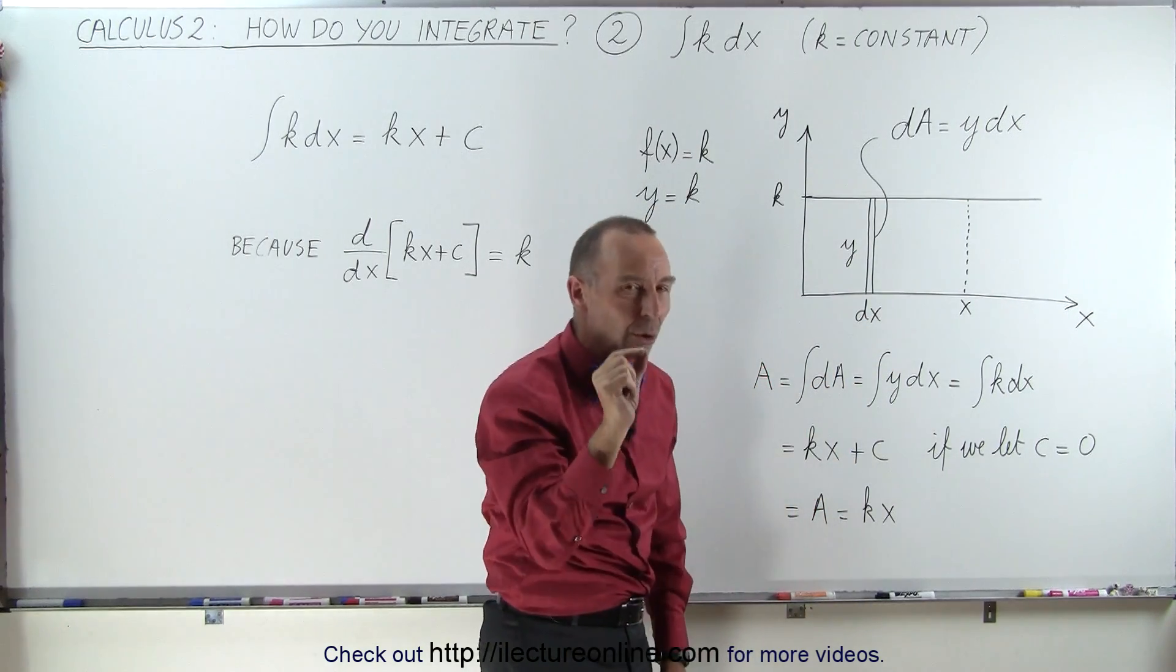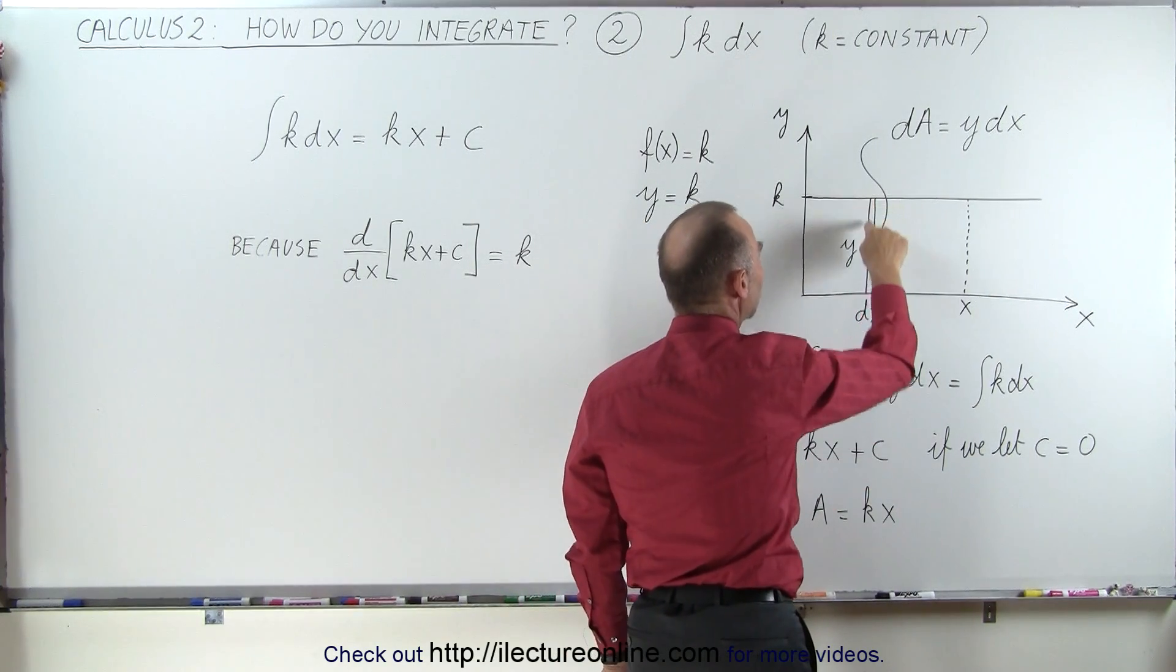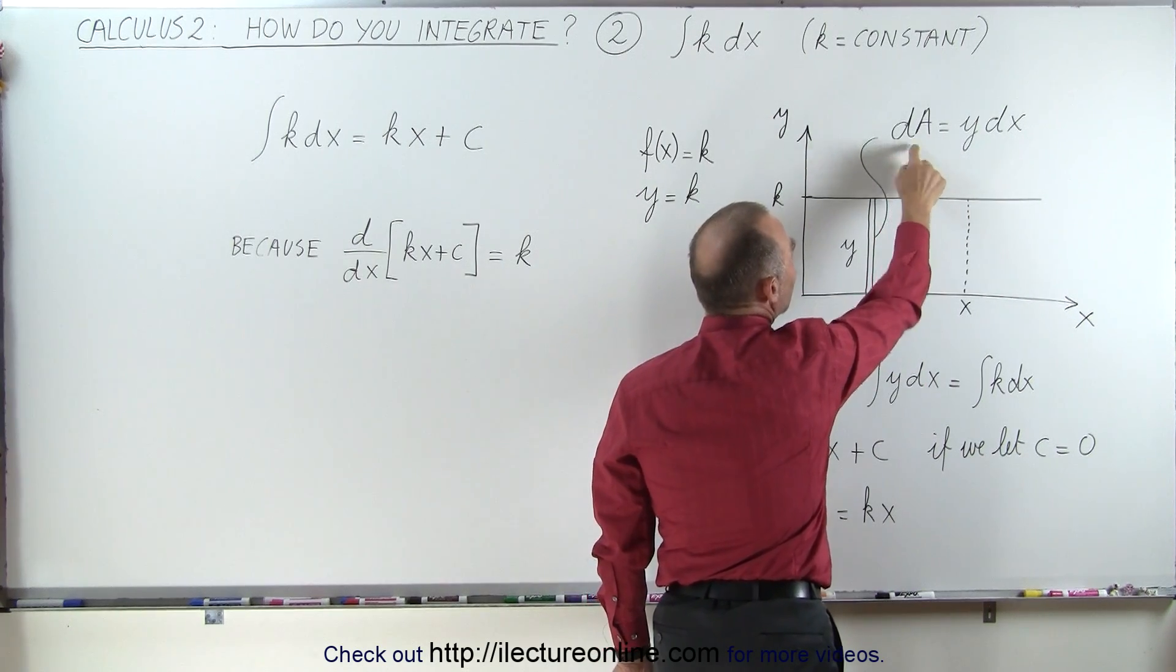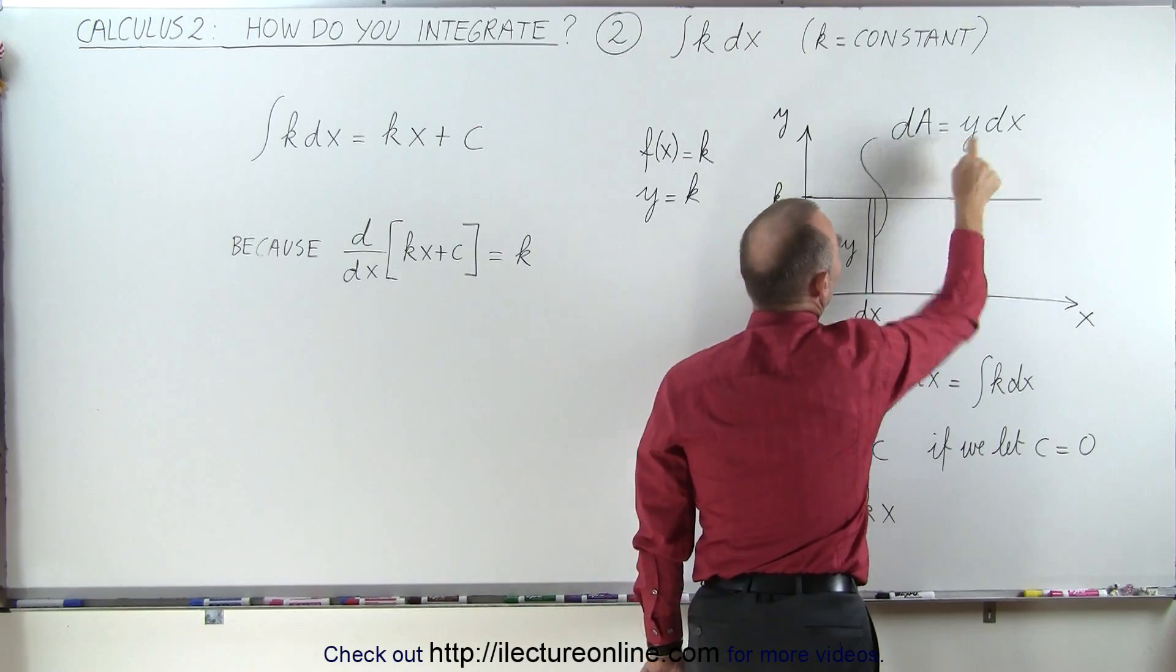dx represents a really small change in x. If we multiply these two together, we get the area of that little strip. We'll call that a small little dA. dA means a very tiny little area, which is equal to the product of y times dx.